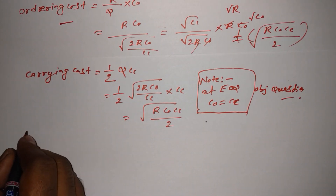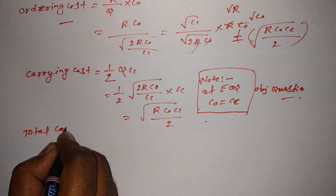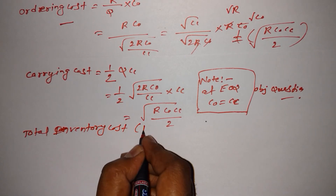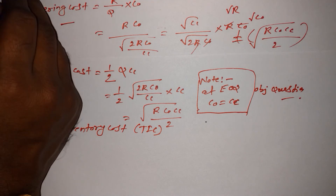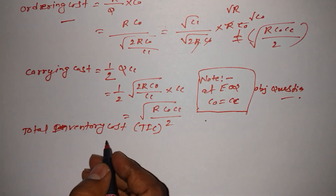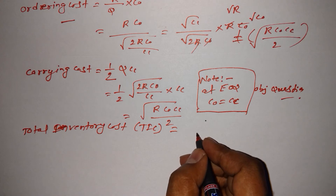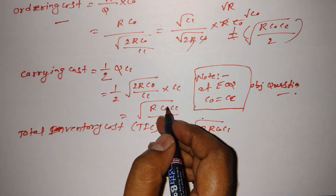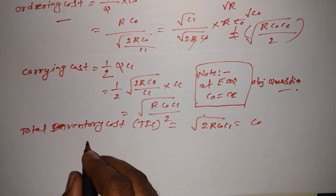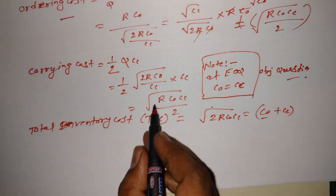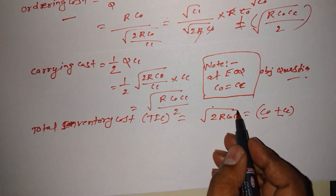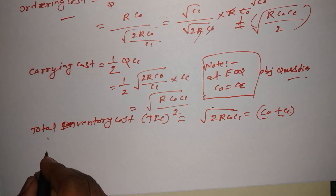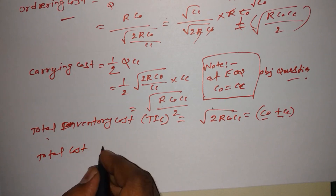Moving to the total inventory cost formula: at EOQ, TIC = √(2RC₀ × CC), because carrying cost and ordering cost are equal and we add both. Total cost per unit time = RCC + TIC = RCC + √(2RC₀ × CC).